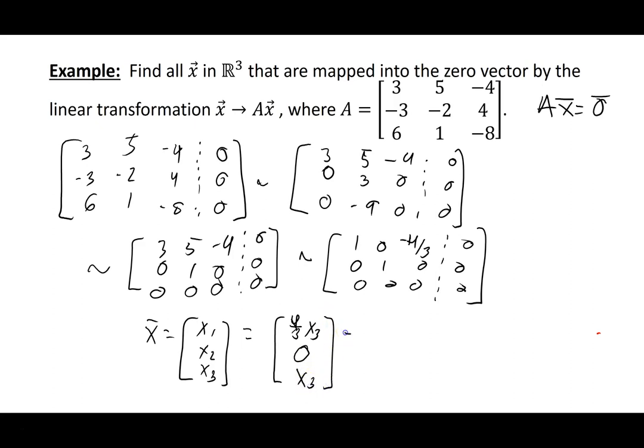So in other words, my vector x is equal to the vector 4 thirds, 0, 1, times the x3 constant component. So this is the set of all vectors which map to the zero vector under the linear transformation A. Thanks!